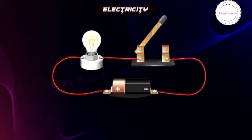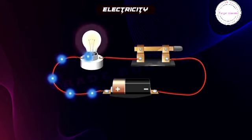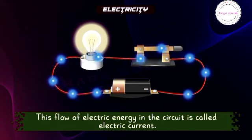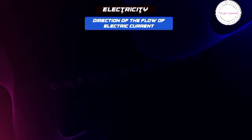If the switch is in off position, the circuit is not complete. When the switch is on, the circuit becomes complete and the electricity starts flowing in the circuit. This flow of electric energy in the circuit is called electric current.